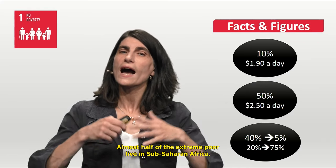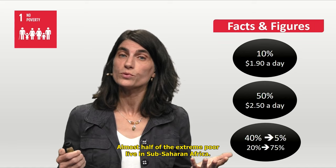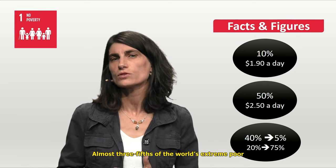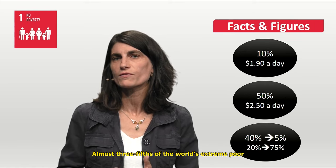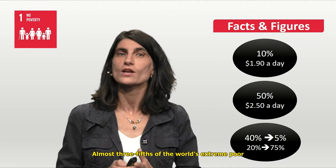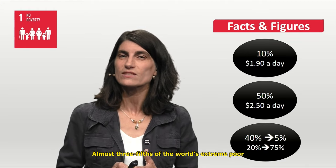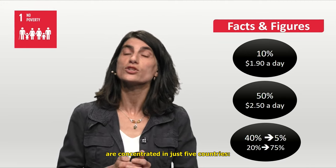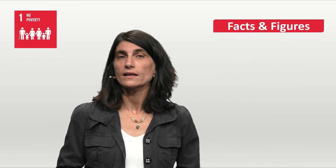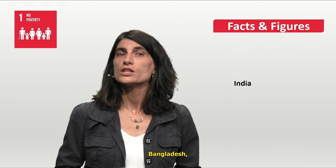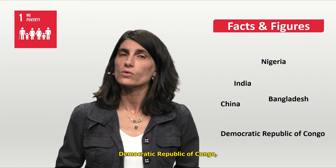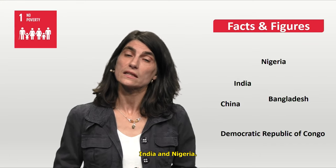Almost half of the extreme poor live in sub-Saharan Africa, and almost three-fifths of the world's extreme poor are concentrated in just five countries: Bangladesh, China, the Democratic Republic of Congo, India, and Nigeria.